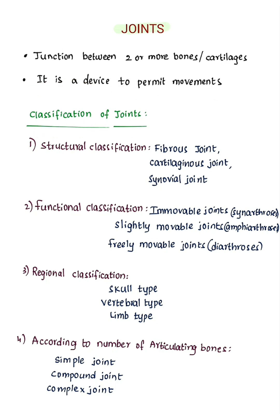Classification of joints includes: structural classification, functional classification, regional classification, and classification according to number of articulating bones.